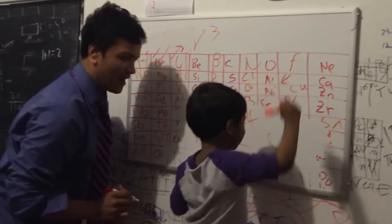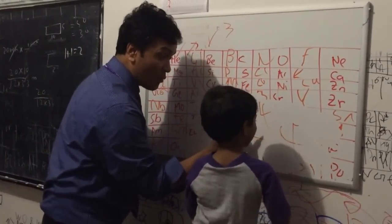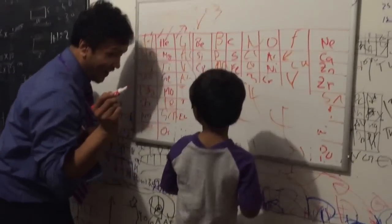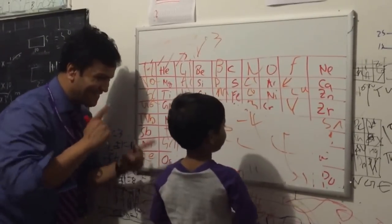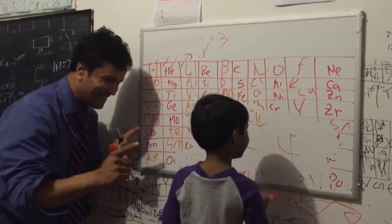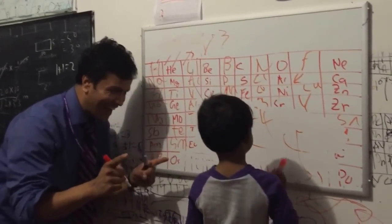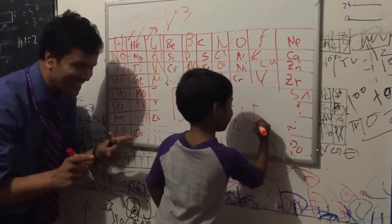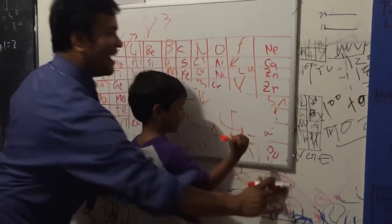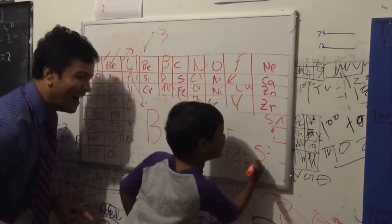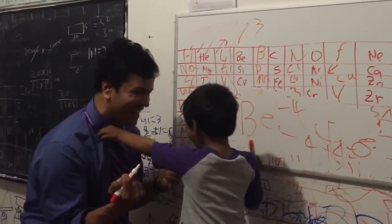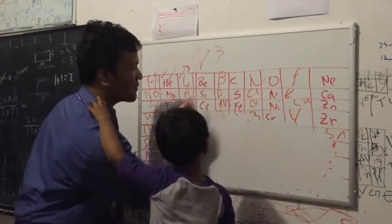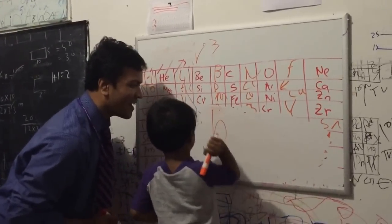I'm very proud of you. What is the next element after lithium? Beryllium. Can you try to say it? Beryllium. And what comes after beryllium? Boron. Yes! Up to boron.